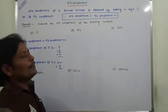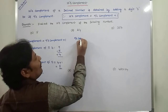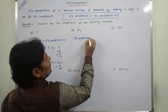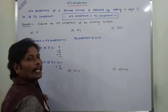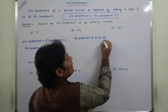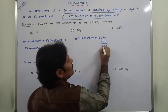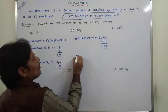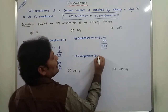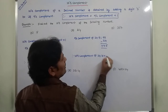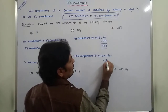Next, find out the 10's complement of 24. The 9's complement of 24: there are two digits, so each and every digit is subtracted from 9. 9 minus 4 is 5, and 9 minus 2 is 7, giving 75. Therefore, the 10's complement of 24 is: 9's complement of 24 is 75, plus 1, which equals 76.